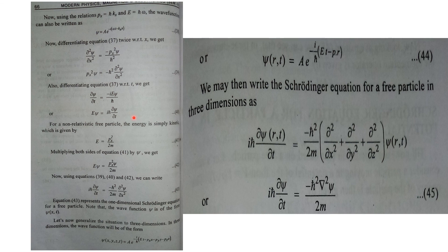For a non-relativistic free particle — meaning a particle with lower speed — we can write the expression for energy as E equals p² divided by 2m. This comes from kinetic energy: E equals half mv². Multiplying and dividing by m gives m²v²/2m, and mv is momentum, so that is p²/2m. Multiplying both sides by psi, we get E·ψ equals p²ψ/2m.